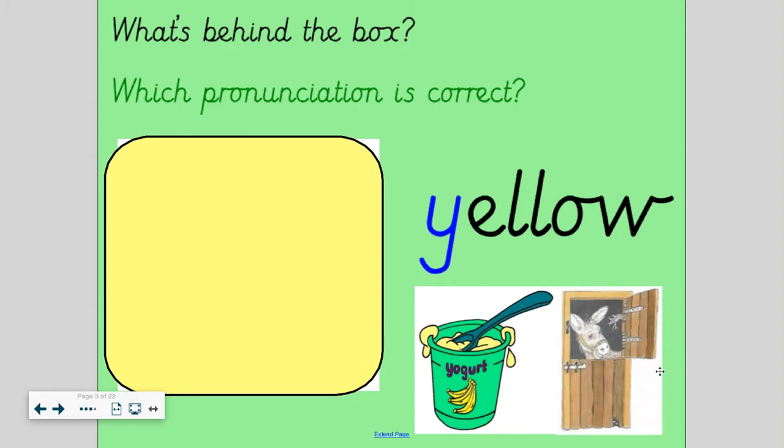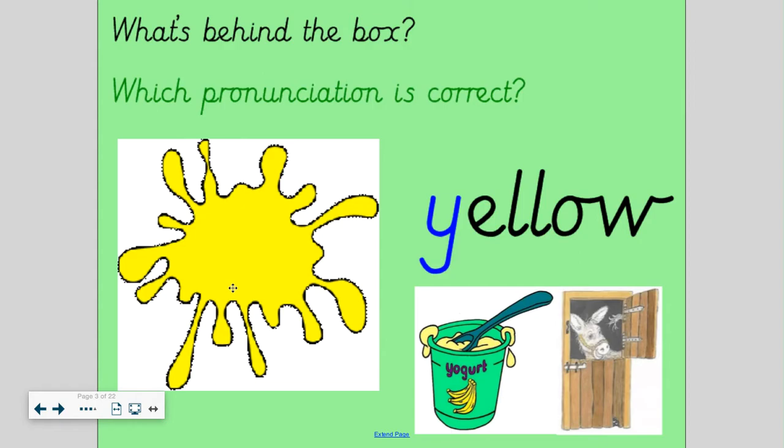Let's try with the ee sound now. E-e-l-l-o-w. Which one do you think is right? Yu or ee. Yes, I think I agree. Let's have a look. That's right. It's the colour yellow underneath. It was the yu sound for this word.